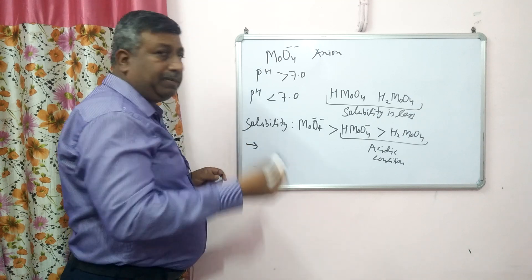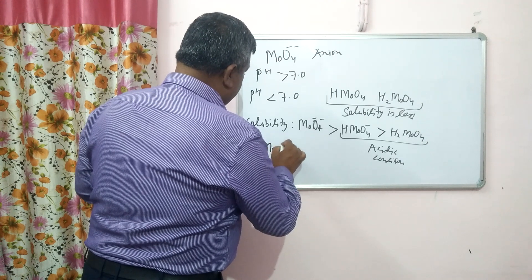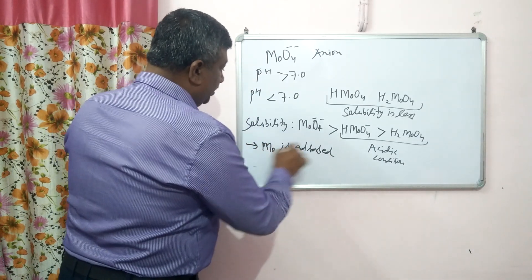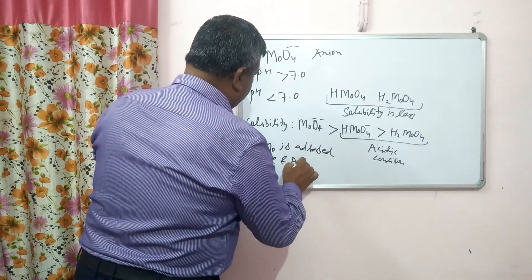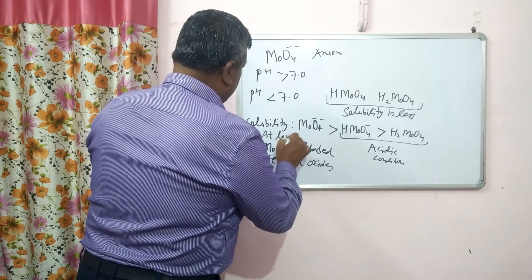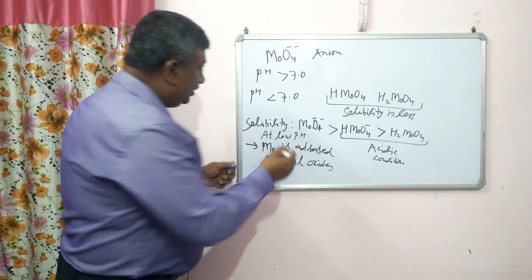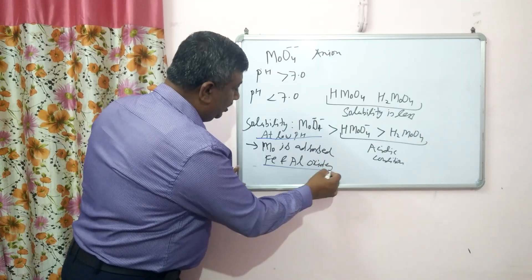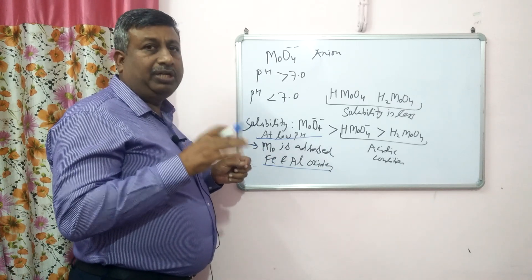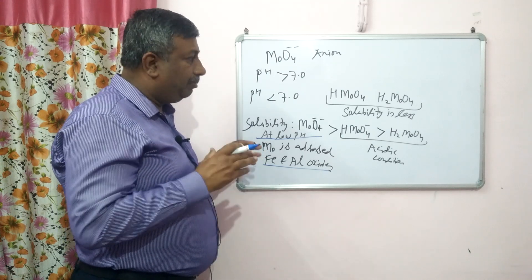Another reason is that under acidic conditions, molybdenum is adsorbed on iron and aluminium oxides. At low pH, molybdenum is tightly adsorbed by aluminium and iron oxides and is not present in the soil solution, so availability is reduced.